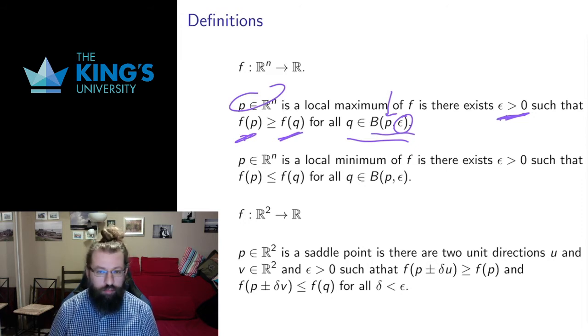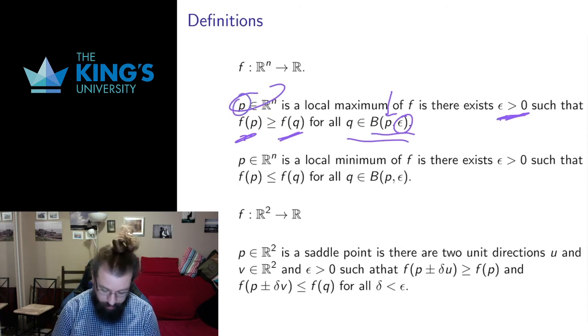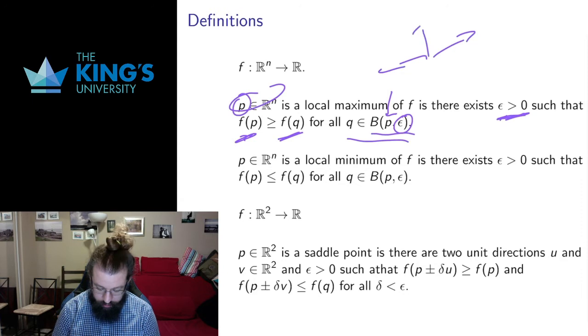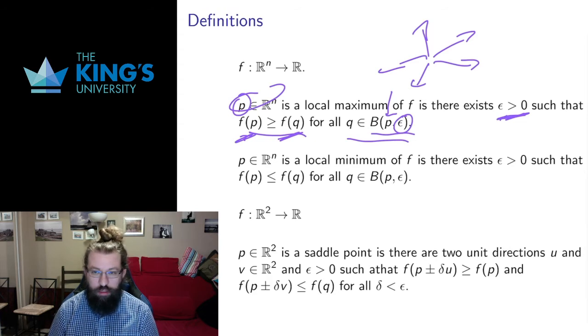In R^n, I have multiple directions to approach a point. We solved this with limits. Same thing here for local max and local min. A local maximum has to be a maximum in all directions of movement from the point. So from this point p, I can move out in all sorts of directions, and no matter what direction I go, I need to get values that are lesser than or equal to my maximum if this is indeed a maximum.